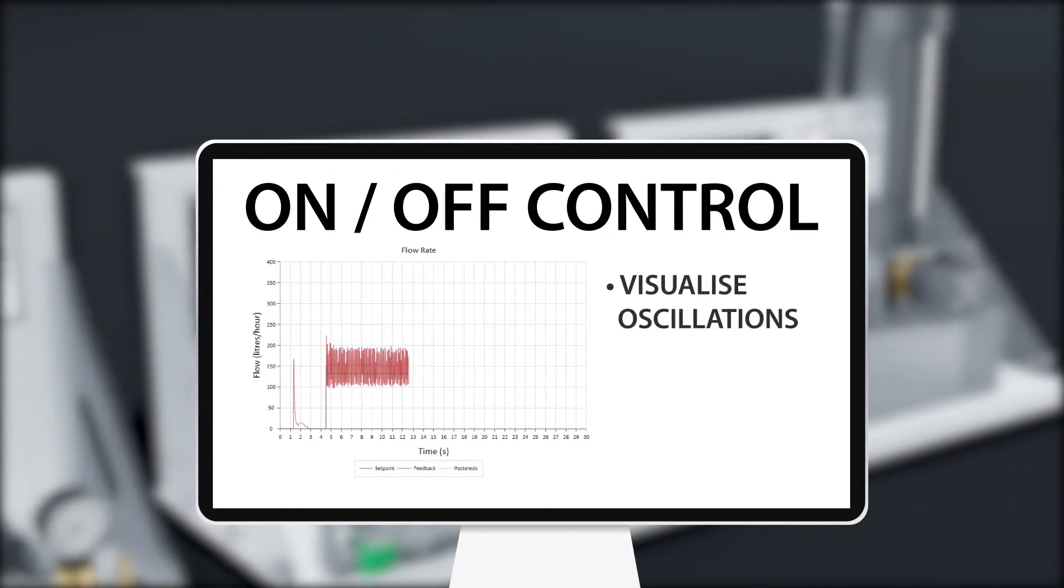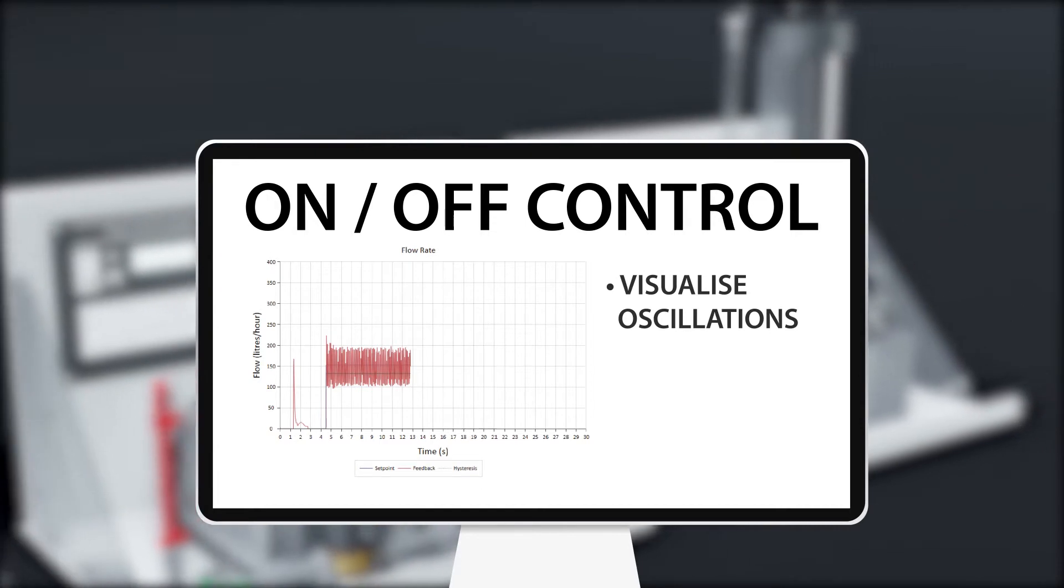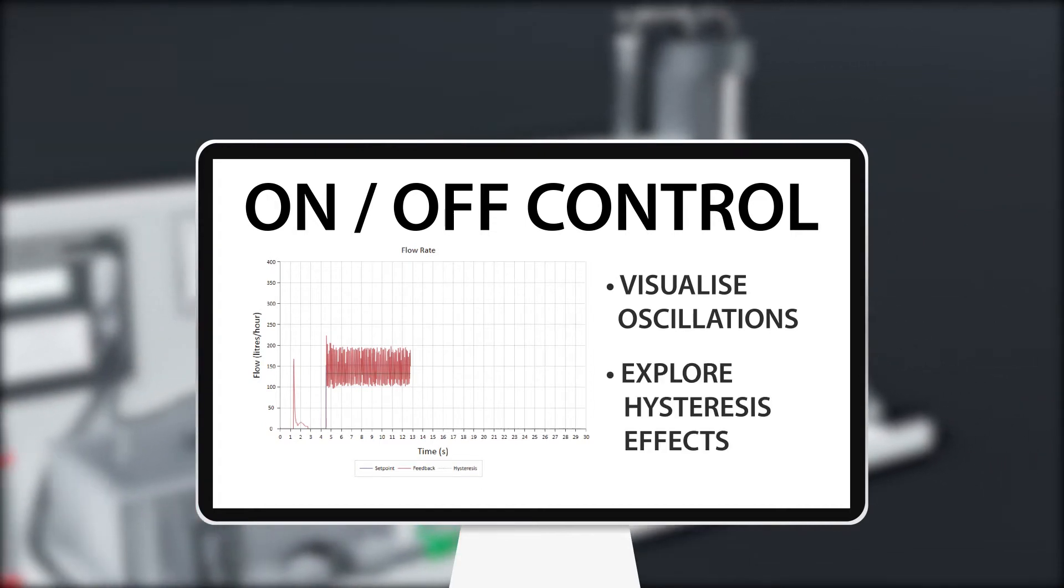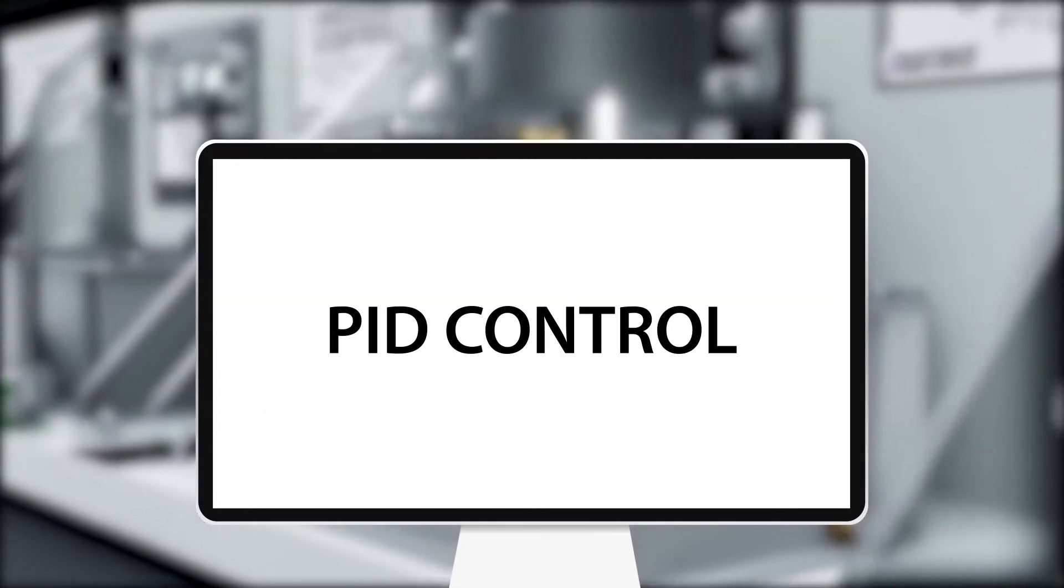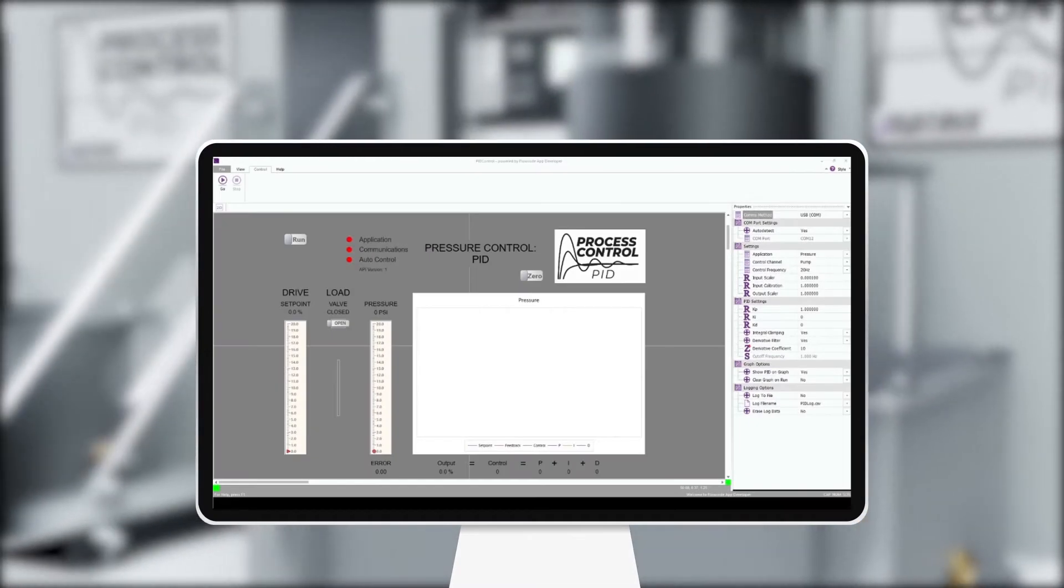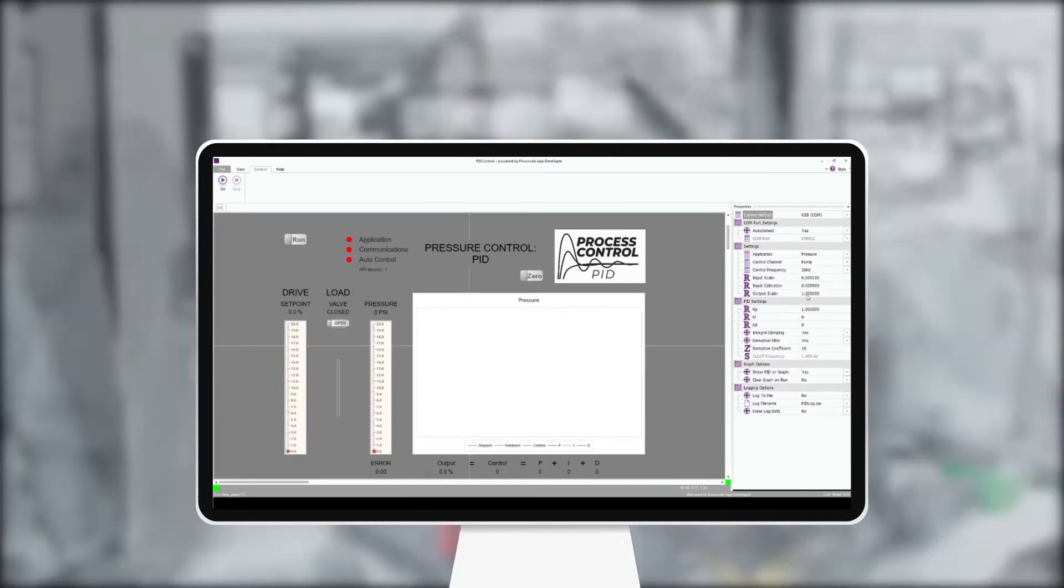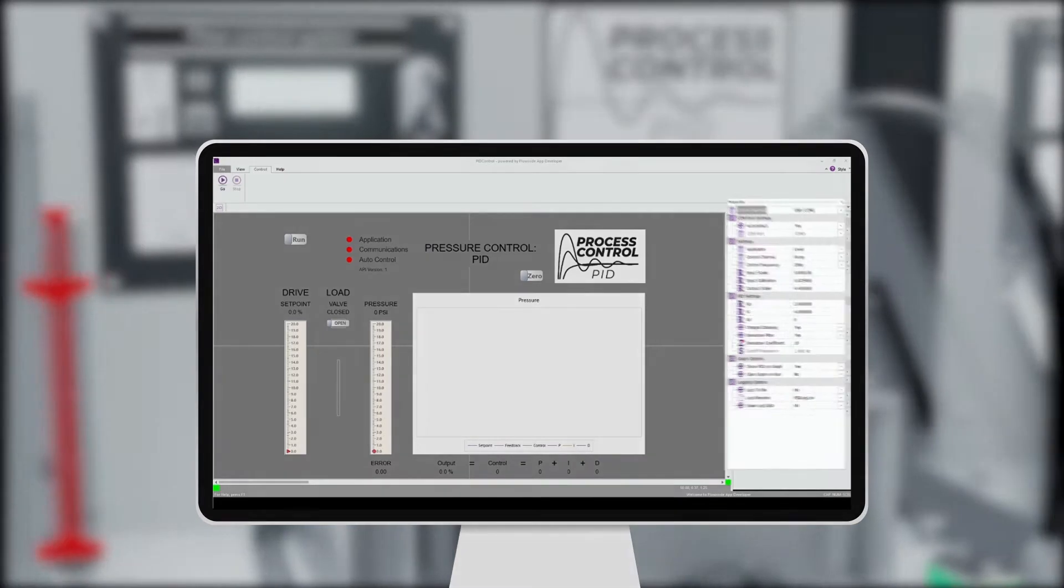PID control software allows students to enter values for Kp, Ki, Kd and to see how the system reacts to those values. The properties section of the PID software allows students to control sampling frequency, control parameters, sensor scaling and calibration factors, and drive scaling factors.